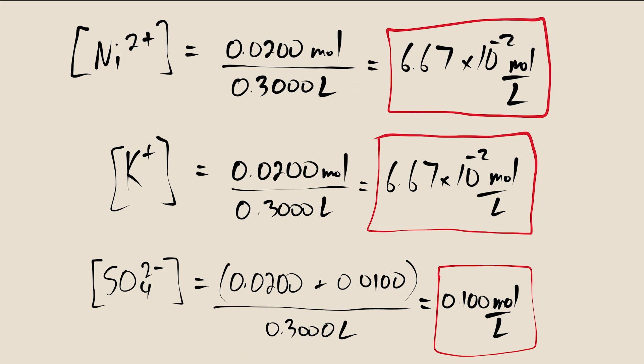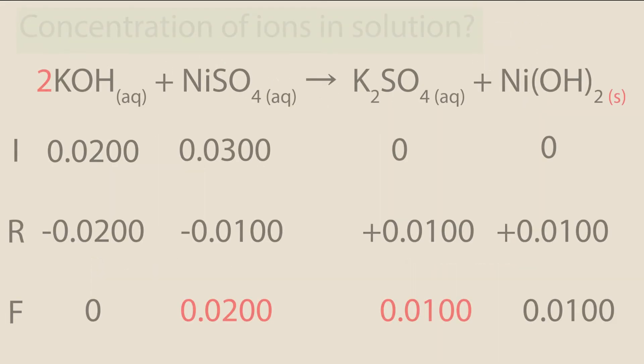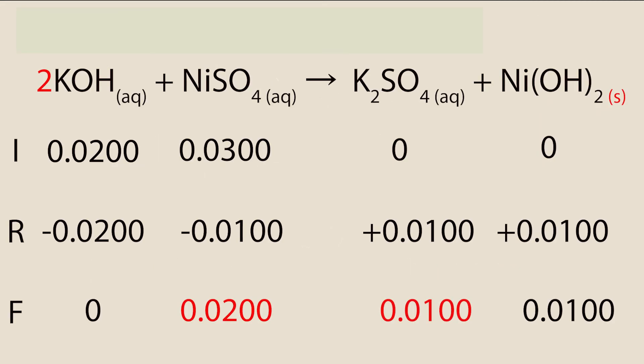It should also be noted that since the potassium ion and the sulfate ion are spectator ions, the amount of moles of each ion in solution remains unchanged over the course of the reaction. Initially, there were 0.0200 moles of potassium ion and 0.0300 moles of sulfate ion, and those numbers remain unchanged over the course of the reaction.